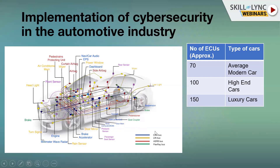In CAN bus, messages are sent as broadcasts — when you send a message from one node to another, it goes to all nodes. Each node decides whether it is interested in that message, and the interested nodes decrypt and act on the message. If a hacker can connect a dummy ECU to your CAN bus, they can receive all messages passing through — including safety-related messages about airbags, temperature, or brake systems.